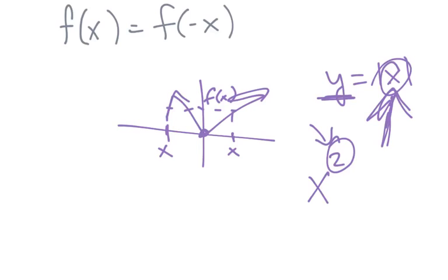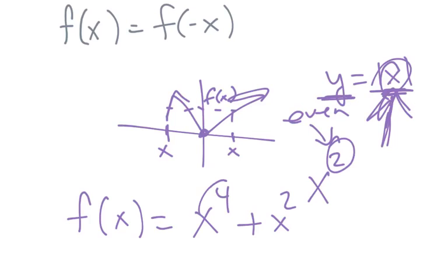So this just means the exponent is some even power, or you have something like the absolute value where, whether it's positive or negative, you get the same value. So if in your polynomial, if all the exponents are even, you know it's going to be even.